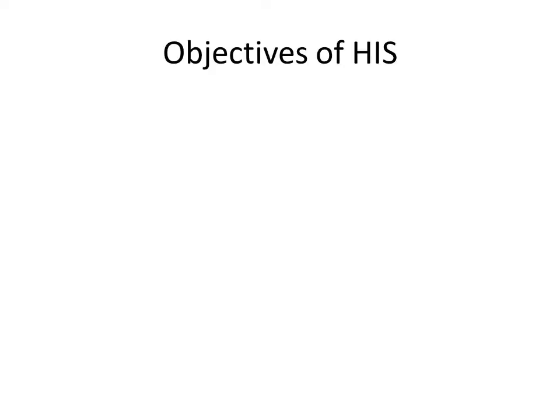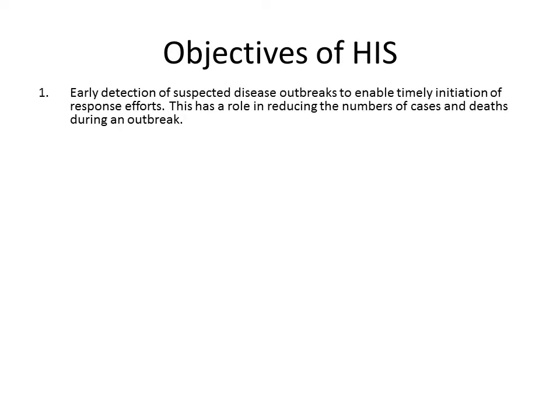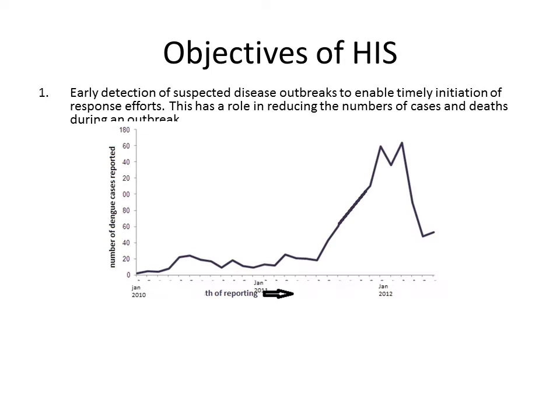What are the objectives of health information system — why do we maintain such an elaborate system of recording, keeping, analyzing, and transmitting data? The first objective is early detection of suspected outbreaks. If we are monitoring the incidence of select diseases every month, we can detect an early peak, leading to timely detection of an outbreak and timely initiation of control measures, hence reducing the number of cases and deaths during an outbreak.